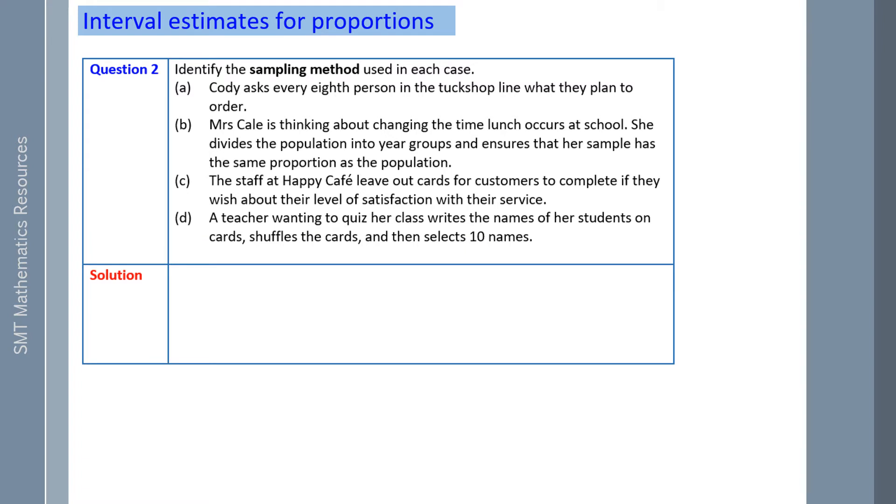Question 2: Identify the sampling method used in each case. The first one, Cody asks every 8th person in the tuck shop line what they plan to order. That is a systematic sample. Every 8th person.